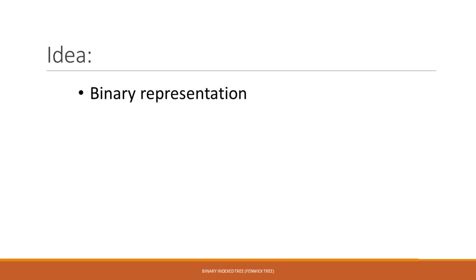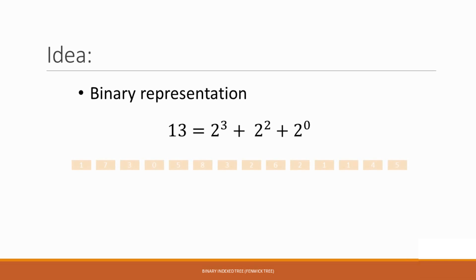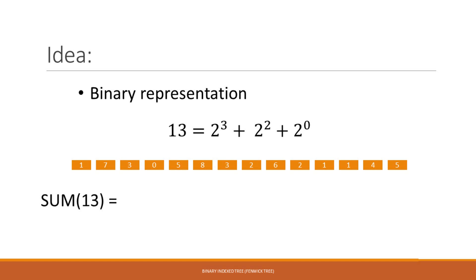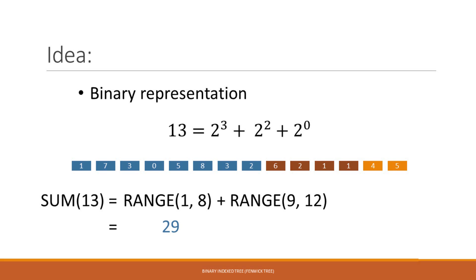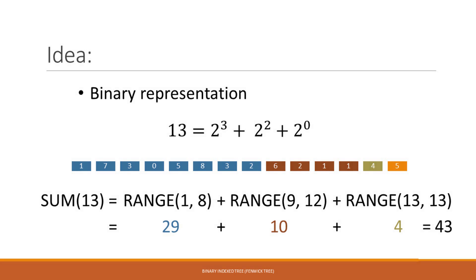And here is the idea. We use the binary representation of each number. For instance, the binary representation of 13 is 2 to the power of 3 plus 2 to the power of 2 plus 2 to the power of 0, which is 8 plus 4 plus 1. So we want to compute the sum of the first 13 numbers. The idea is we compute the range of the first 8 numbers, which is 29. Then we compute the range of the next 4 numbers, which is 10. And then the range of the next 1 number, which is 4. If we have all these ranges pre-computed, we only have to add these 3 numbers.